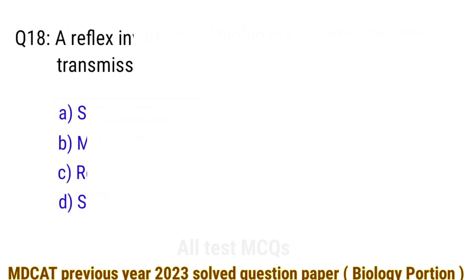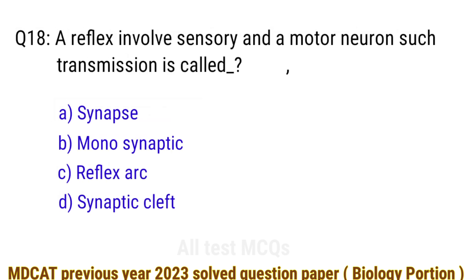Question number 18. A reflex involves a sensory and a motor neuron. Such transmission is called? The right answer is option C: a reflex arc.